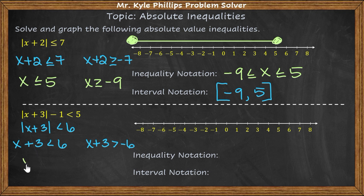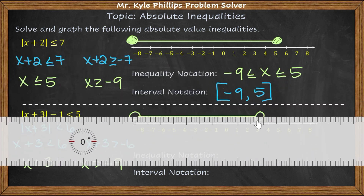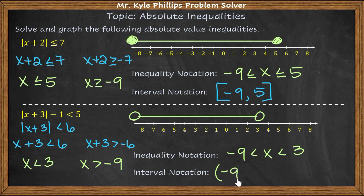Subtracting 3, I get x is less than 3, and x is greater than negative 9. Graphing this: negative 9 is an open circle because I can't include it, and less than 3 is also open. It's any value in between. Inequality notation: negative 9 is less than x, which is less than 3. Interval notation: (−9, 3) — both get parentheses because neither endpoint is included.